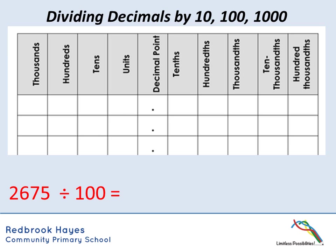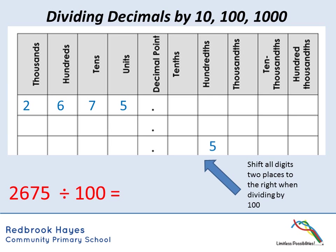Next example: 2675 ÷ 100. We put 2675 into the place value chart. Dividing by 100 means we shift the digits two places to the right, because 100 has two zeros. Moving each digit two places: the five goes to the hundredths, the seven to the tenths, the six into the units, and the two into the tens. Our answer is 26.75 — every digit has moved two places to the right.